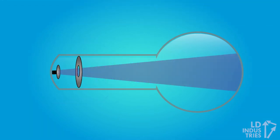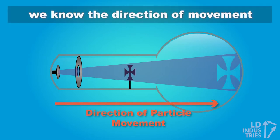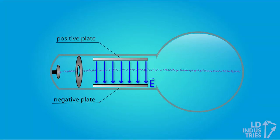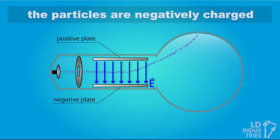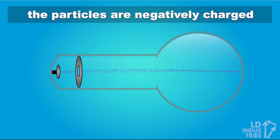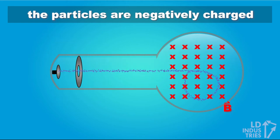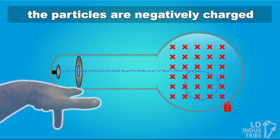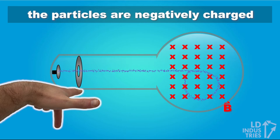Secondly, the ray casts a shadow if an object is placed in its way, so we can work out the direction of the movement of the particles as they go through the tube. And lastly, we know the charges must be negatively charged since they feel an electric force in the opposite direction of the electric field, and because they obey the third left-hand rule, which only applies to negatively charged particles.